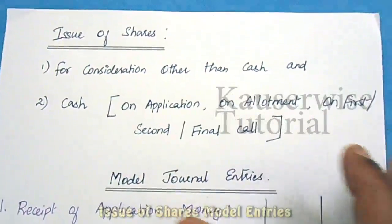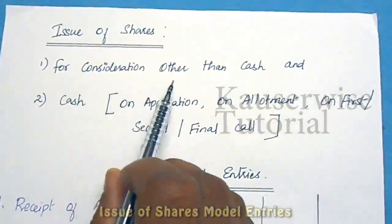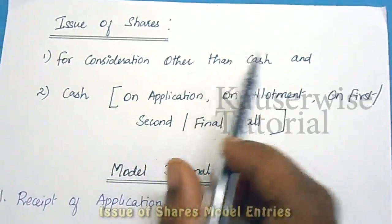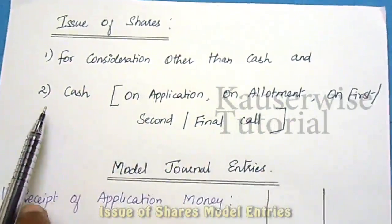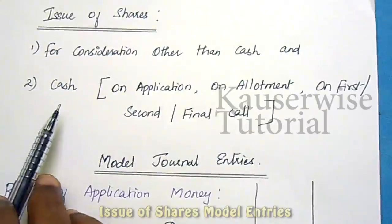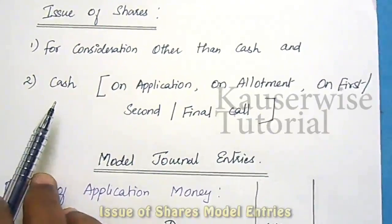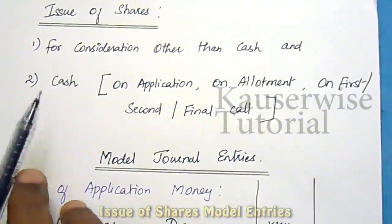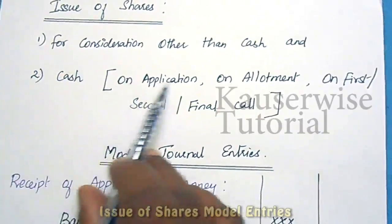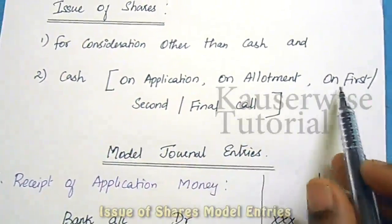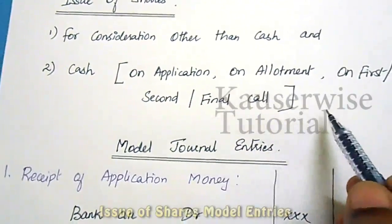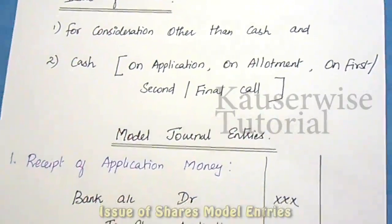Issue of shares can be for consideration other than cash or for cash. For cash, the amount can be collected in one installment or on an installment basis — on application, allotment, first call, second call, and final call.